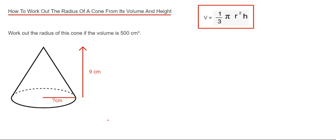So before you start, you need to know the formula for working out the volume of a cone, which is shown in the red box. The formula is v equals one-third times pi times r squared times h, where v is the volume, r is the radius, and h is the height.